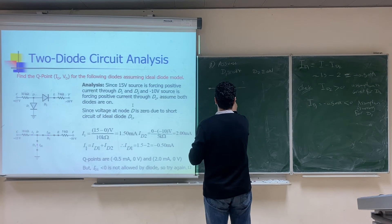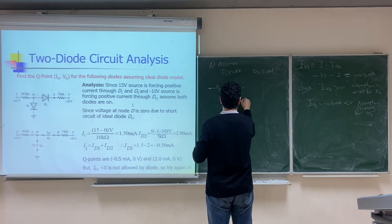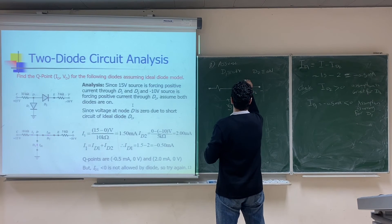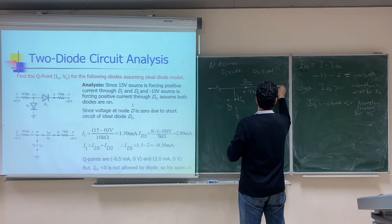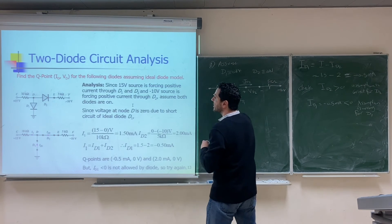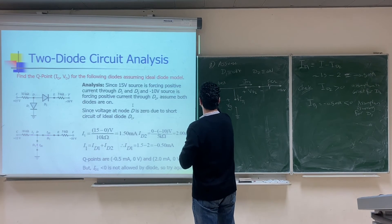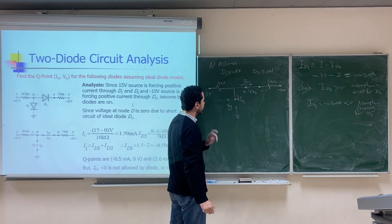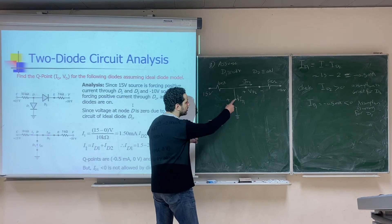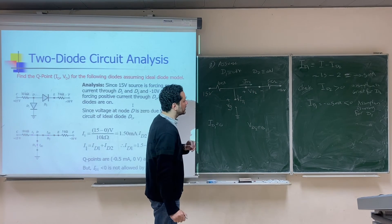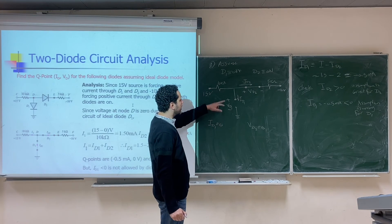With D1 off (open circuit) and D2 on (short circuit), the circuit has D1 as an open branch with V_D1 labeled, and D2 as a short circuit with V_D2 = 0. We label I_D1 and I_D2. Since D1 is open, I_D1 = 0. Since D2 is a short circuit, V_D2 = 0.